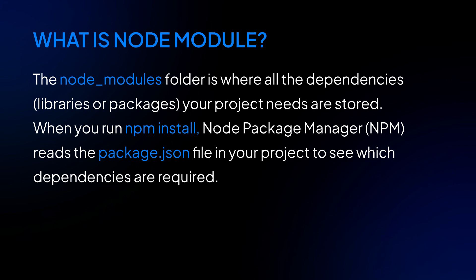Node module is like a folder where all the important packages and dependencies — the tools that you're going to need in order to carry out or build a particular project — are going to be stored. Those lists are always in the package.json file. When you run npm install, npm goes to that package.json, sees all the tools you require, and downloads them into that node module folder.